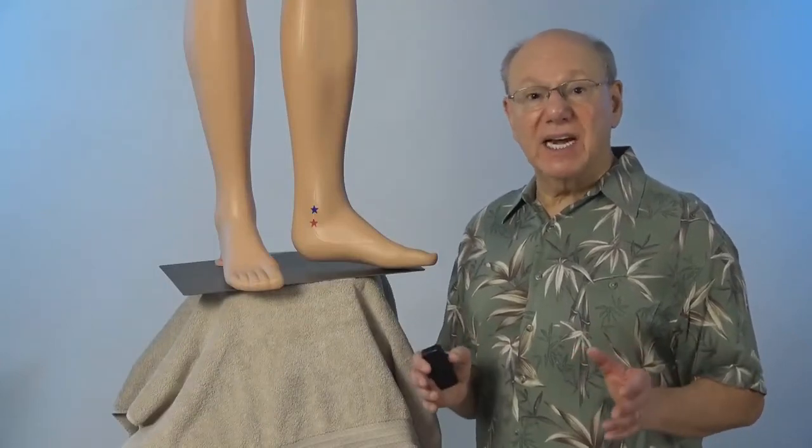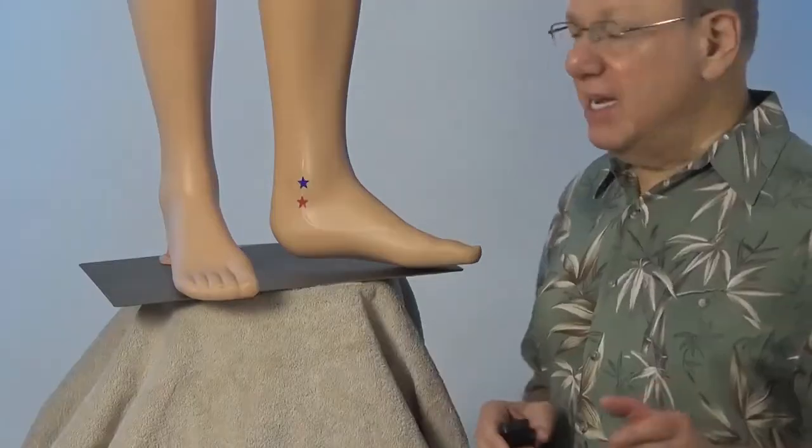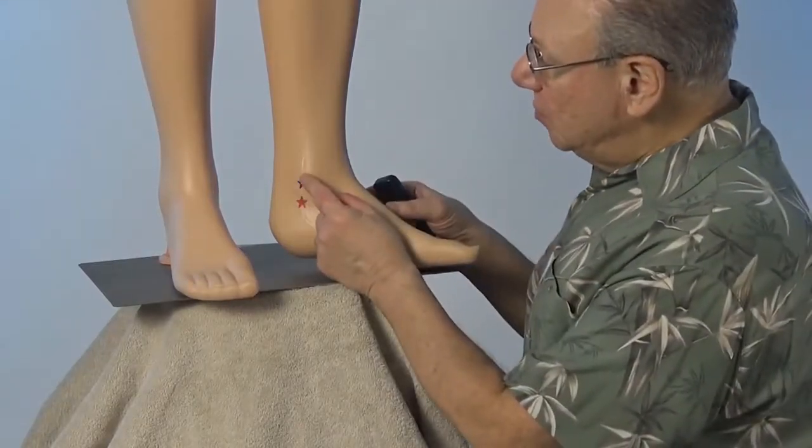Kidney six is located on the inside of your ankle. To locate kidney six on the inside of your left leg, find the tip of your ankle bone right about here.